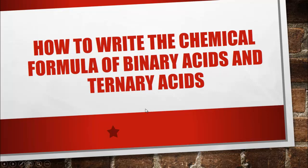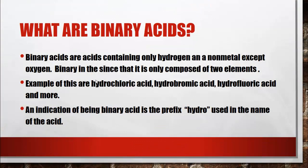Let us first know what binary acids are. Binary acids are acids containing only hydrogen and a non-metal, except oxygen. Binary, since it is only composed of two elements — hydrogen and non-metal. Examples include hydrochloric acid, hydrobromic acid, hydrofluoric acid, and more. An indication of being a binary acid is the prefix 'hydro'.